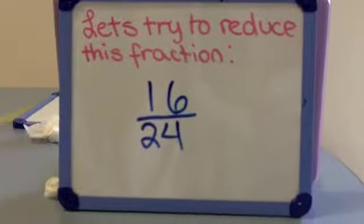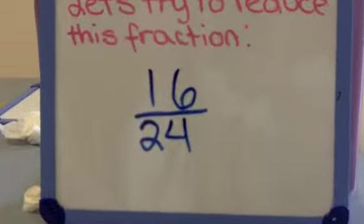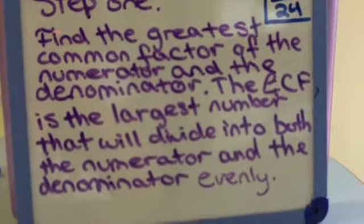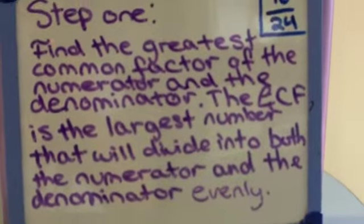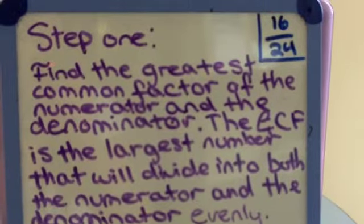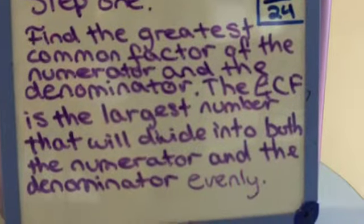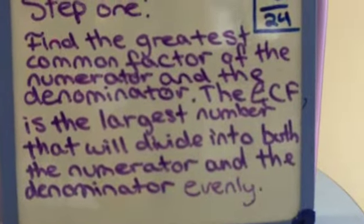Let's try to reduce this fraction, 16 over 24. Step 1. Find the greatest common factor of the numerator and the denominator. The greatest common factor, or GCF, is the largest number that will divide into both the numerator and the denominator evenly.